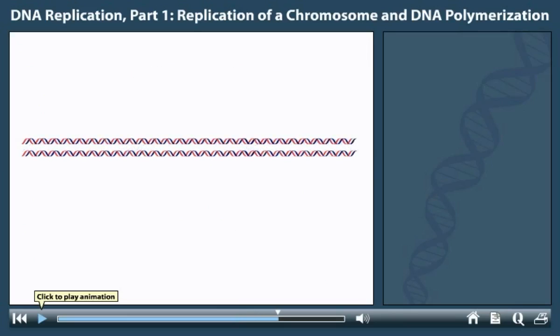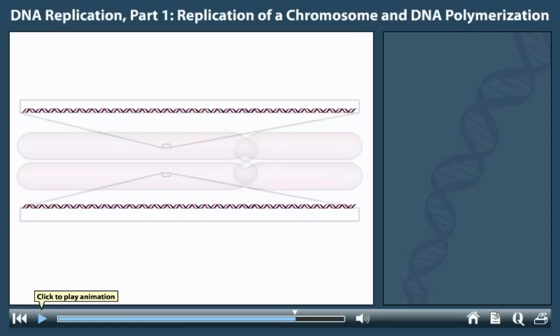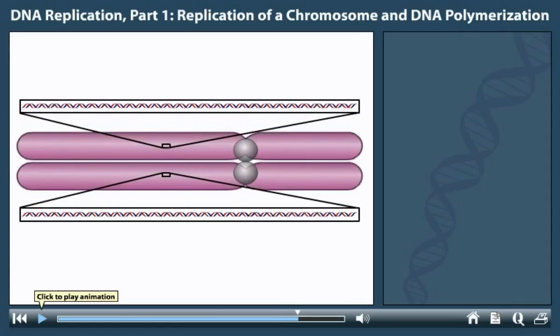The original chromosome has been replicated to form two identical daughter DNA molecules, also called sister chromatids.